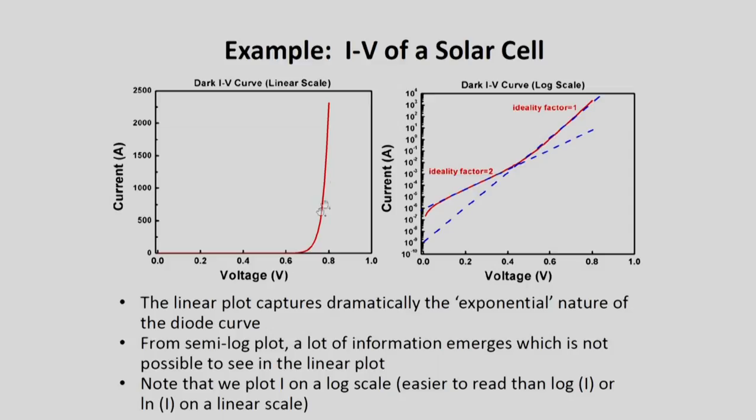However, you cannot get too much information out of a linear scale. But if you were to plot it on a semi-log scale, so here is the current plotted on a semi-log scale versus voltage now on a linear, the current is on a log scale, the voltage is on a linear scale. So it is a semi-log plot. You can see that from the semi-log plot a lot of information emerges which it is not possible to see here.